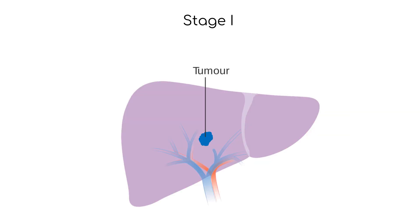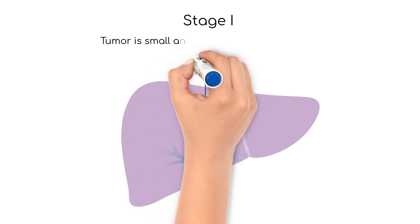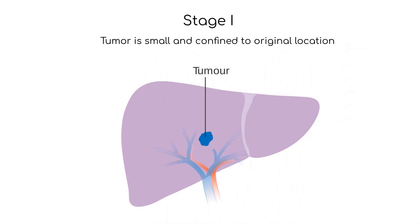Stage 1 is the earliest stage of cancer when the tumor is still small and confined to its original location. At this stage the cancer cells have not yet spread to nearby tissues or other parts of the body. Depending on the type of cancer, stage 1 may also be referred to as localized cancer.